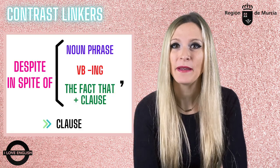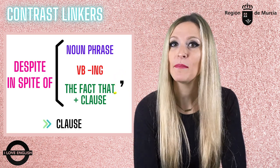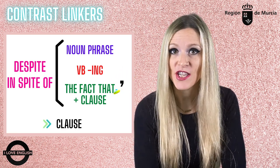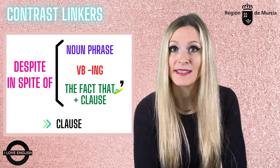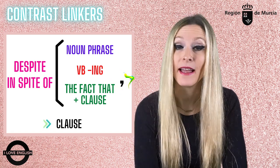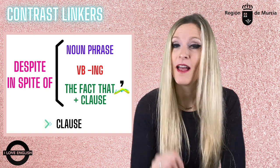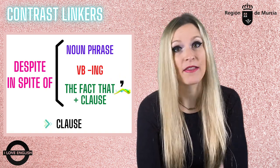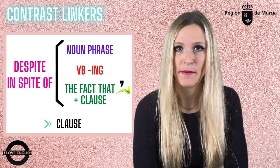These linkers usually appear at the beginning of a sentence and they can be followed by a noun phrase, an -ing verb, or the expression 'the fact that' and a clause. Then a comma, and the second part of a sentence will be another clause. Let's look at these three structures separately.